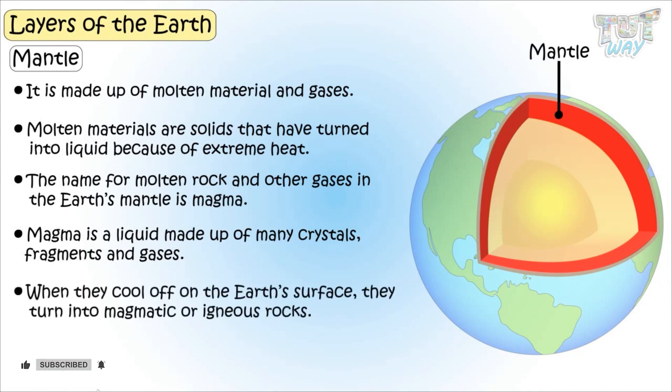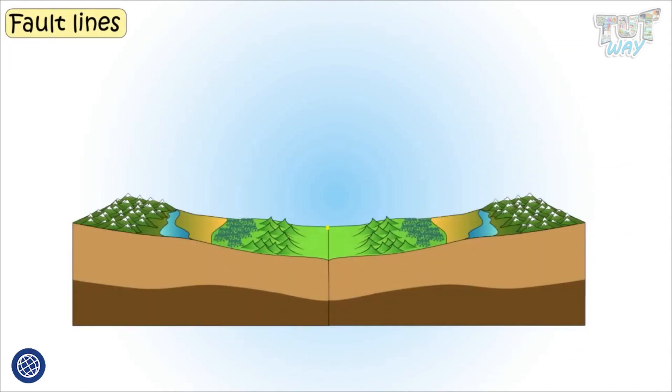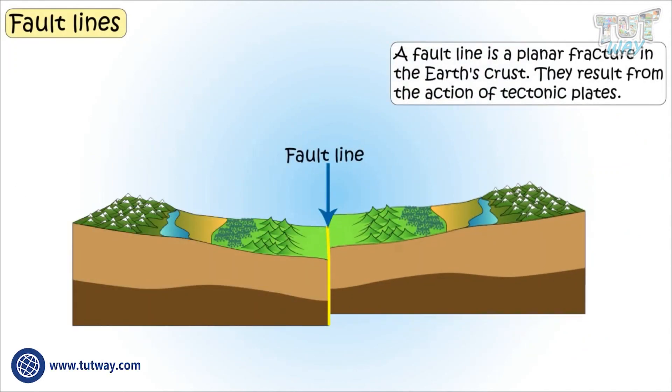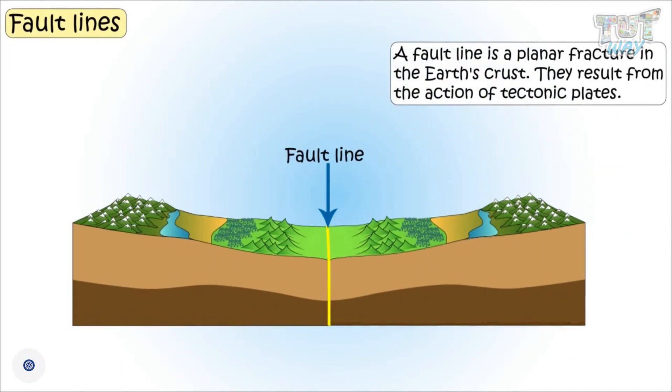When they cool off on the earth's surface, they turn into magmatic or igneous rocks. Now let's learn what are fault lines. A fault is a planar fracture in earth's crust. They result from action of tectonic plates.